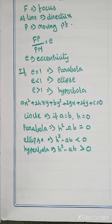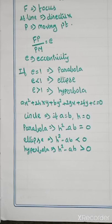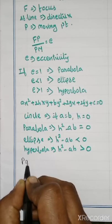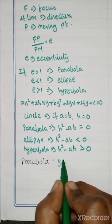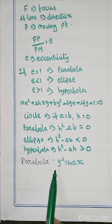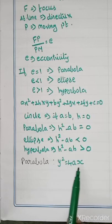Now take your book, page number 109, parabola definition. The locus of a point whose distance from a fixed point is equal to its distance from a fixed line is called a parabola. The general equation of a parabola is y² = 4ax.